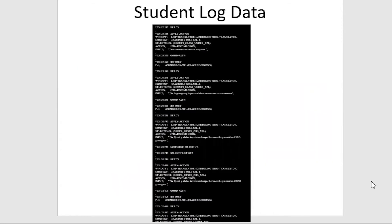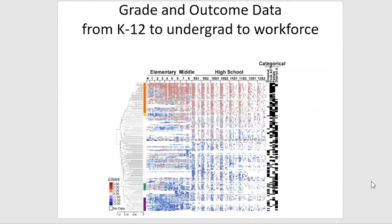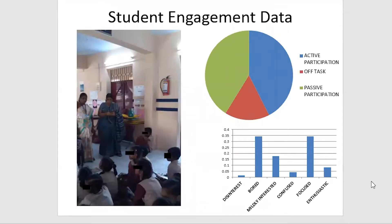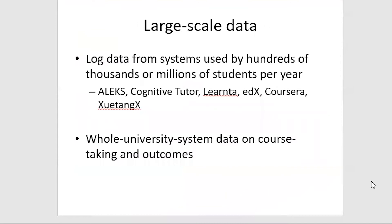These environments create a great deal of log data, which records everything the student does. There's also increasing data on grade and outcome data, from K-12 learning straight through to workforce. There's also increasing amounts of engagement data — for example, from the BROMP field observation app, used by researchers in several countries to track data on students' engagement. This data is increasingly large scale, with people using log data from systems used by hundreds of thousands or even millions of students per year, as well as whole university system data and whole school district data on course taking and outcomes.